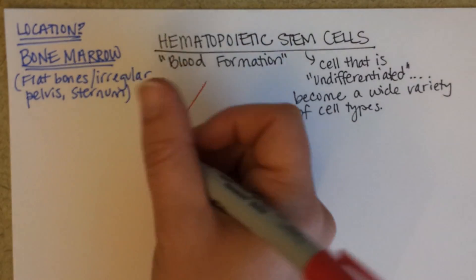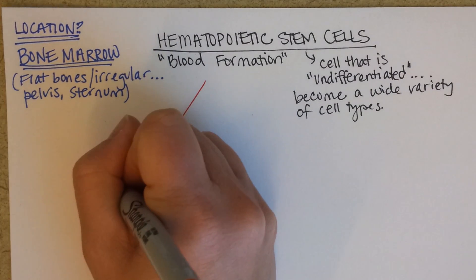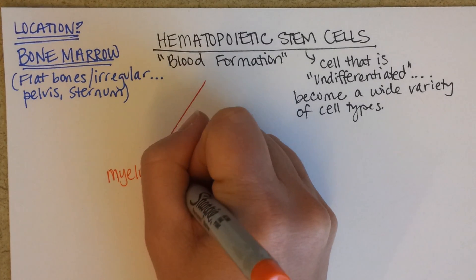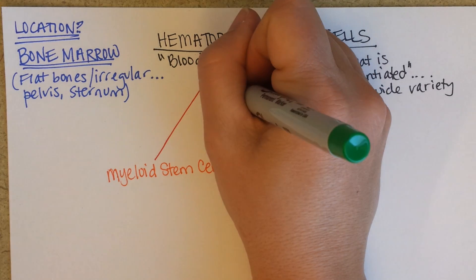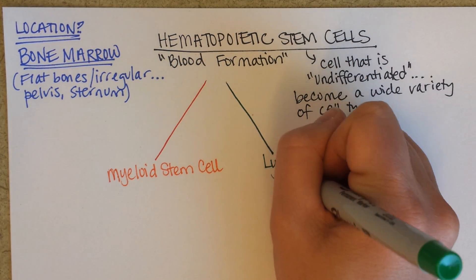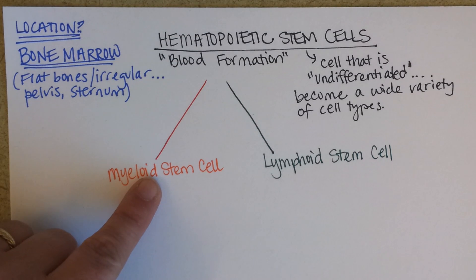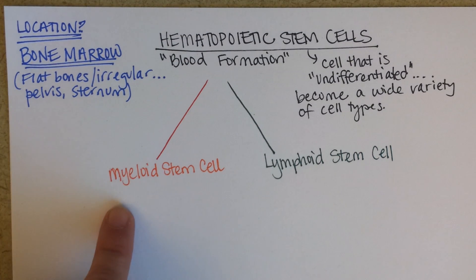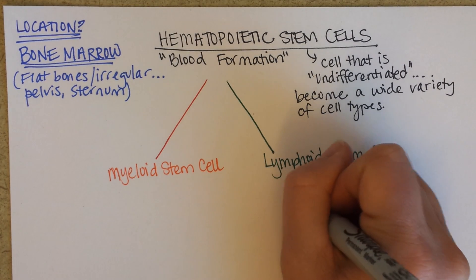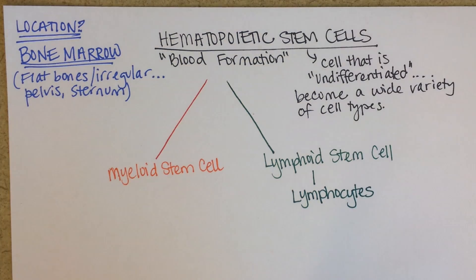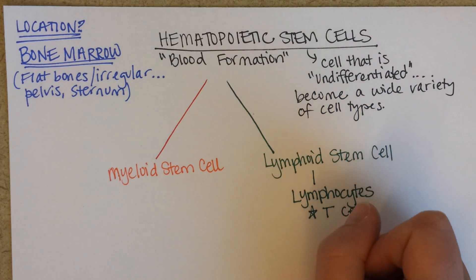They differentiate to become either a myeloid stem cell or a lymphoid stem cell, so they have now chosen a path. Ones that go down the myeloid path can become eventually red blood cells or a bunch of different kinds of white blood cells. Once they go down the lymphoid path, they can now only become lymphocytes — meaning they are either going to become T lymphocytes or B lymphocytes.